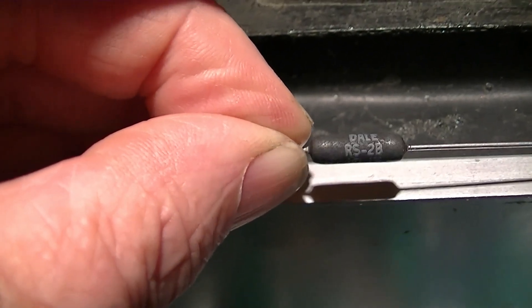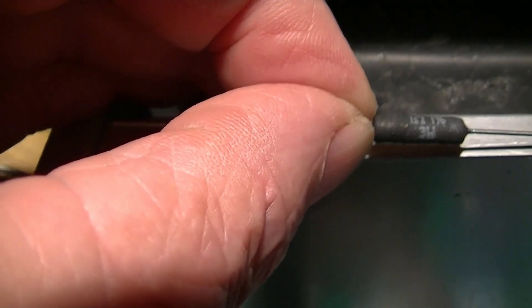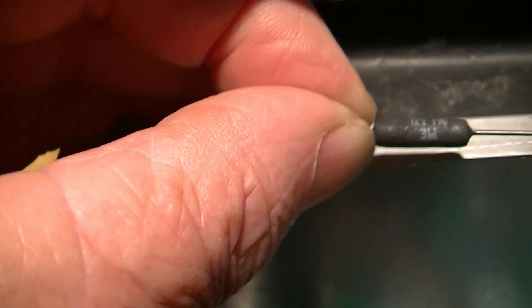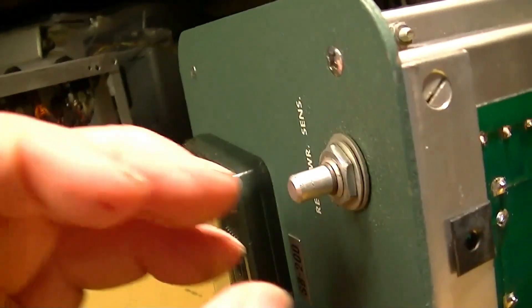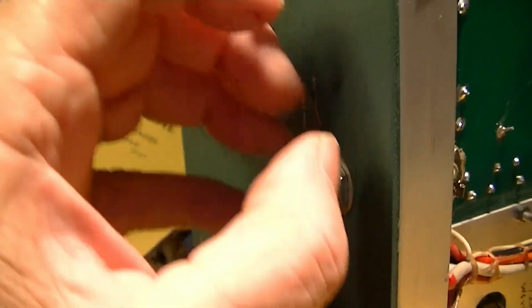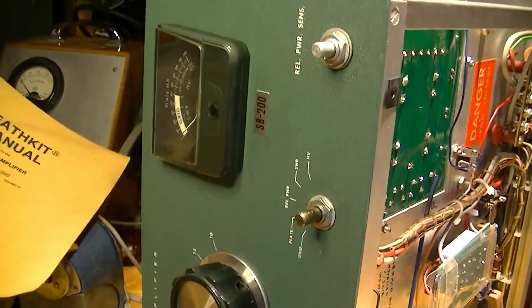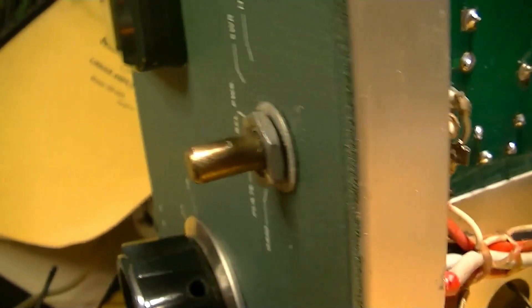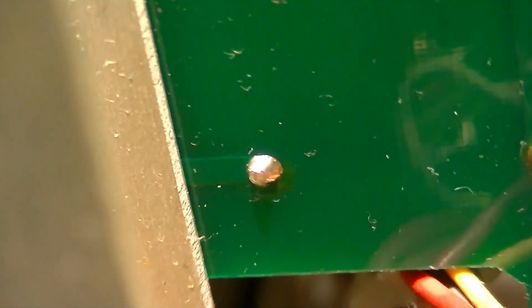Well there it is, a Dale 3 watt 1 ohm 1 percent resistor. The original Heathkit thing called for 5 watt. Now in order to replace this resistor I've got to take these two things loose and pull them out of the side because there's one solder connection that I can't reach otherwise. There's two washers on this pot and one on this switch.